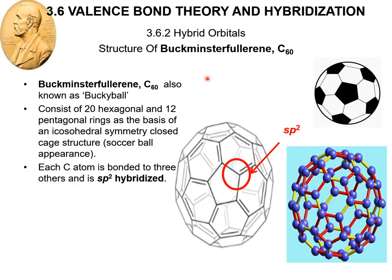A bit about the buckyball: C60, also named Buckminster Fullerene. It consists of 20 hexagonal and 12 pentagonal rings as the basis of icosahedral symmetry, forming a closed cage structure — it looks like a soccer ball. The type of hybridization here is SP2.